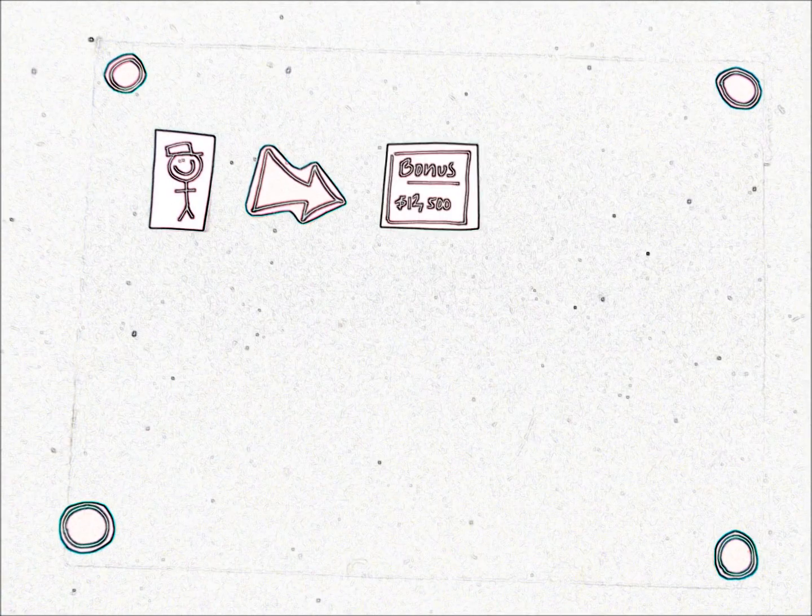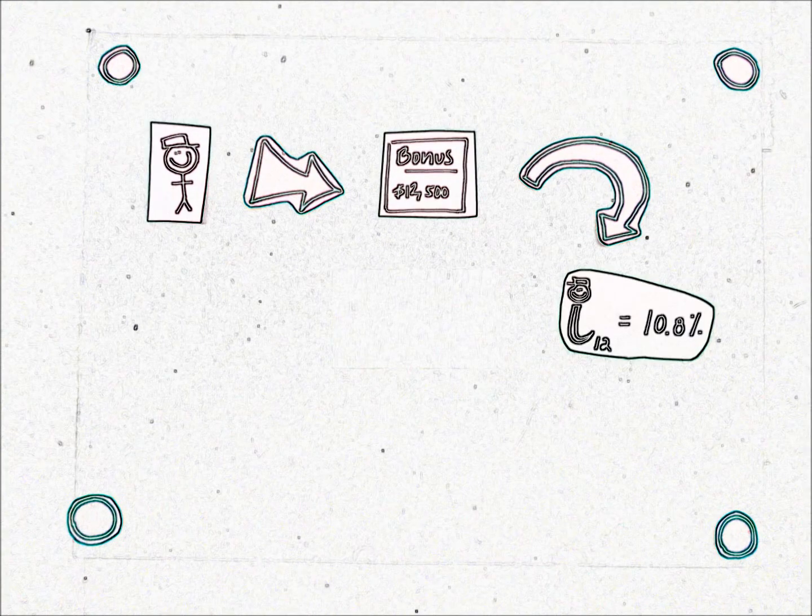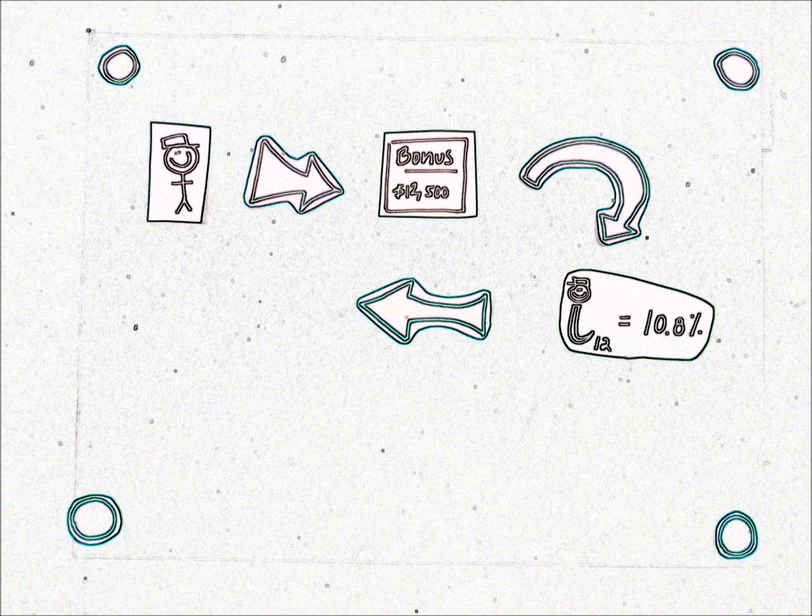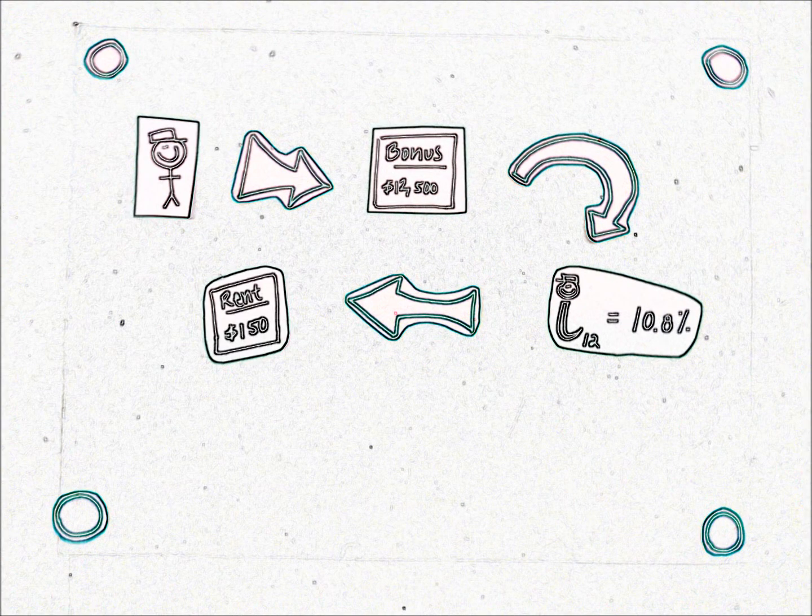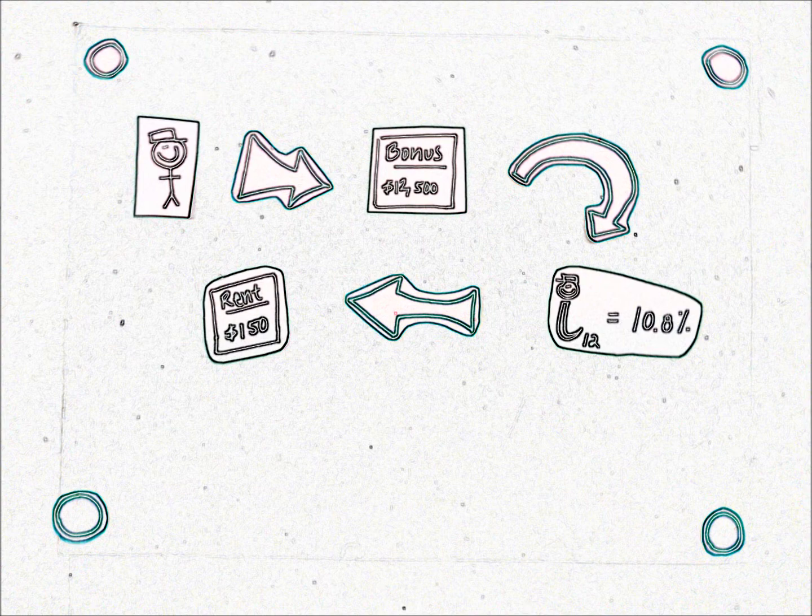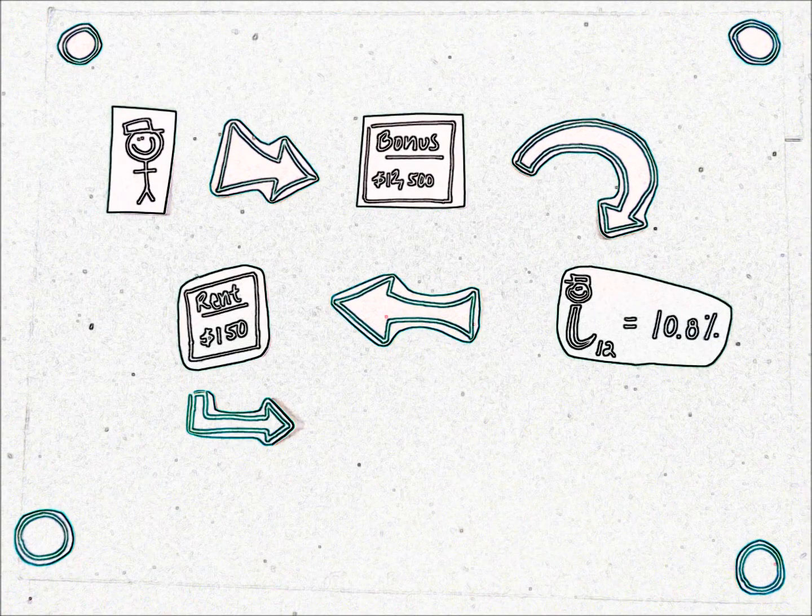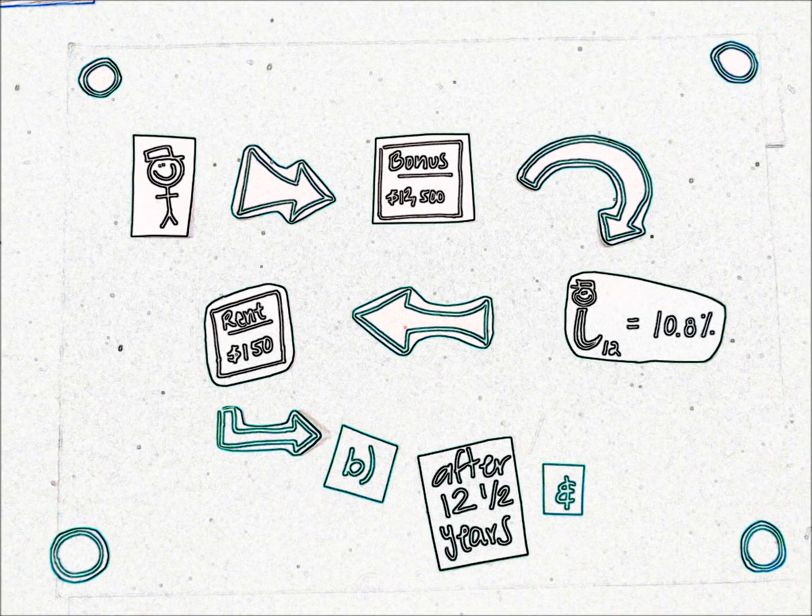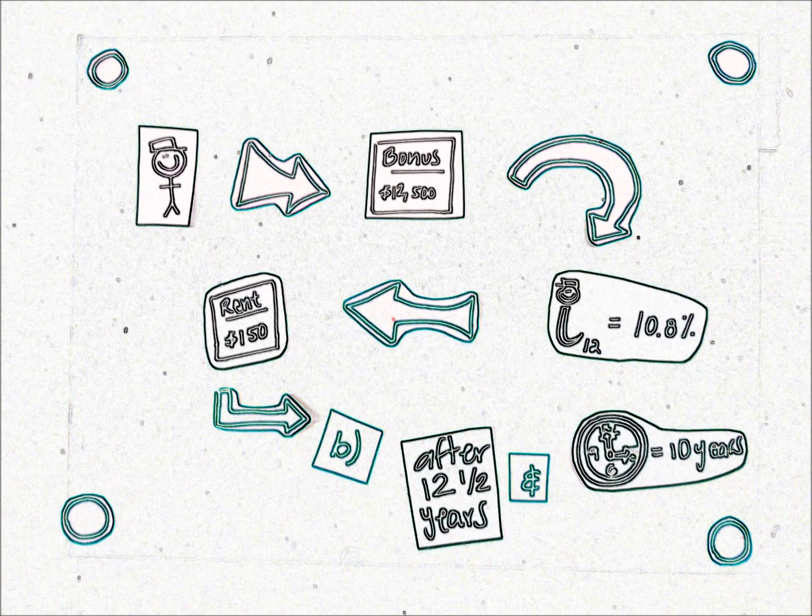So we have a problem to solve. Suppose a salesman invests his $12,500 bonus in a fund that earns 10.8% interest compounded monthly. Suppose also that he makes a contribution of $150 at the end of each month to this fund. Find A, the value after 12.5 years, and B, if after the 12.5 years the fund is used to set up an annuity, how much will it pay at the end of each month for the next 10 years?